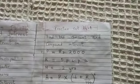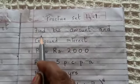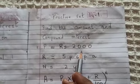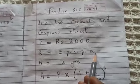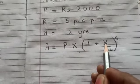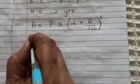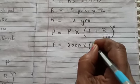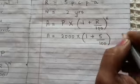We will now solve Practice Set 14.1, the first sum. Find the amount and compound interest on a principal of rupees 2000 for two years at the rate of 5 percent per annum. The formula for finding compound interest is A is equal to P into (1 plus R upon 100) the whole raised to the power of N. Now substituting the values: A is equal to 2000 into (1 plus 5 upon 100) the whole raised to the power of 2.